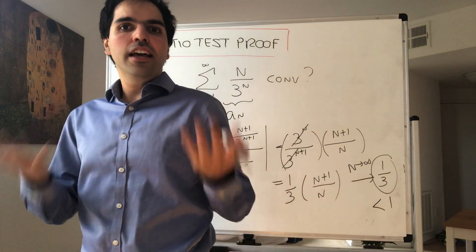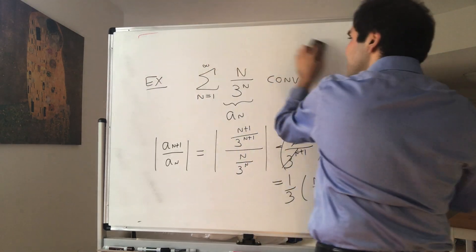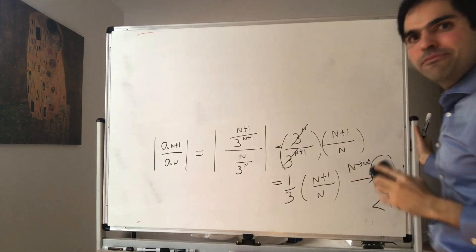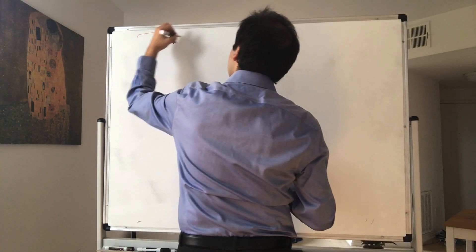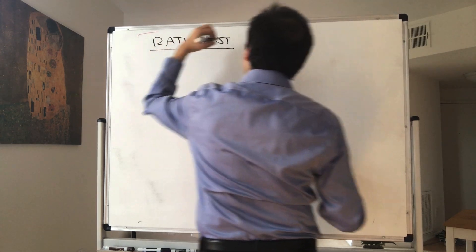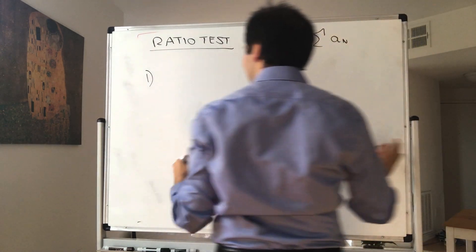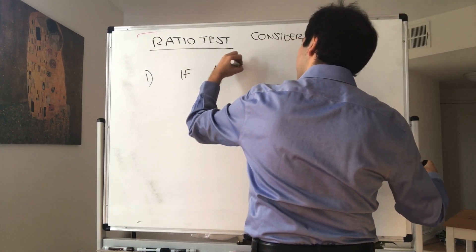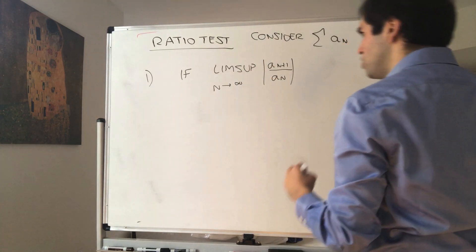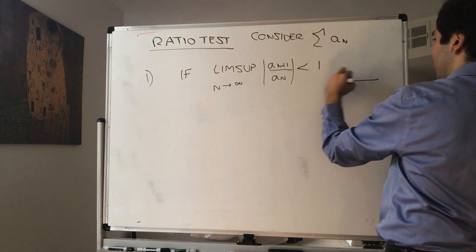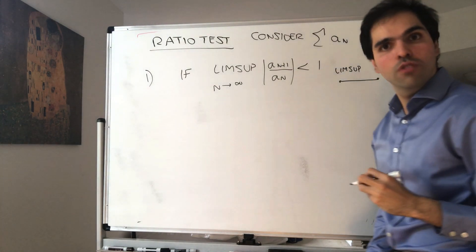The point of today is just proving this ratio test. Since the limit might not exist, we have to use lim sups and lim infs — and you'll see why. So, ratio test: consider the series of a_n. There are a bunch of different cases. If the worst possible scenario — the lim sup as n goes to infinity of a_{n+1} over a_n — is still less than 1, then this is good and the series converges absolutely.